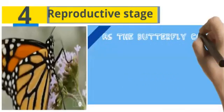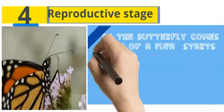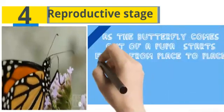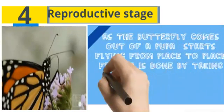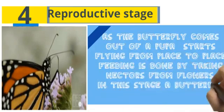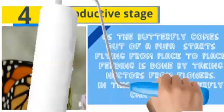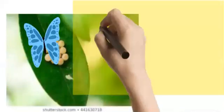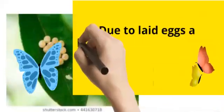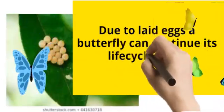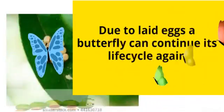Fourth stage: reproductive stage. As the butterfly comes out of the pupa, it starts flying from place to place. Feeding is done by taking nectar from flowers. In this stage, a butterfly can lay eggs. By laying eggs, the butterfly can continue its life cycle again.